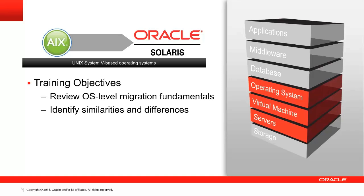AIX and Oracle Solaris are both based on Unix System 5, so the transition to Oracle servers running Solaris 11 isn't a difficult one. However, migrating to any new platform takes time and effort, particularly if the tools and technologies used on the new system are unfamiliar. Database migration is an important piece of the migration story. We'll touch on the database migration tools in this training module, but detailed database migration will be covered separately. Once you've completed this training module, you'll be able to find more detailed information in the Oracle Learning Library and we'll provide you links to key resources.